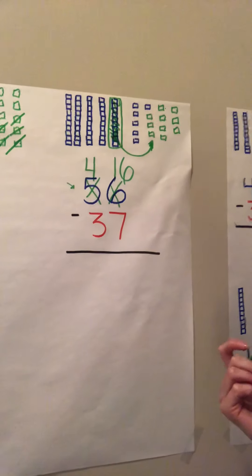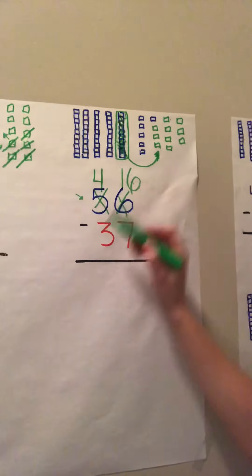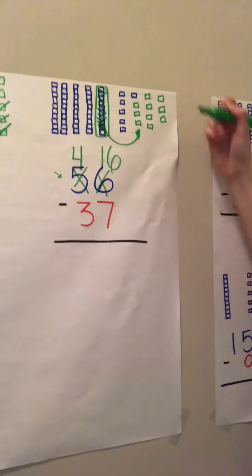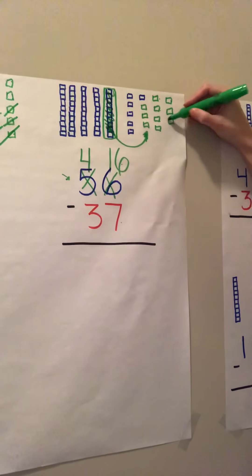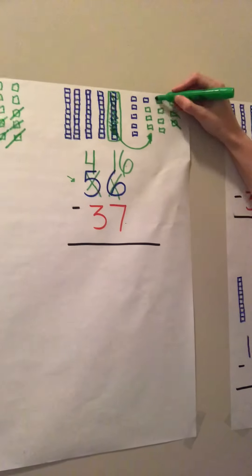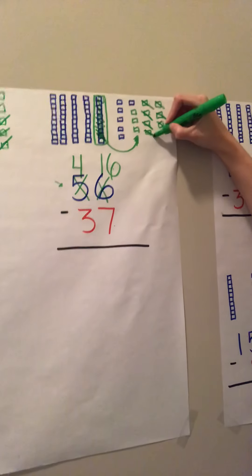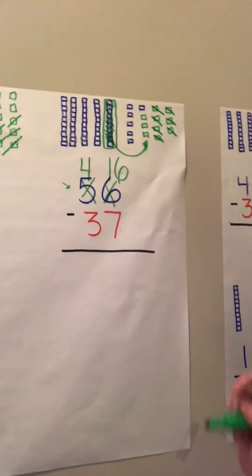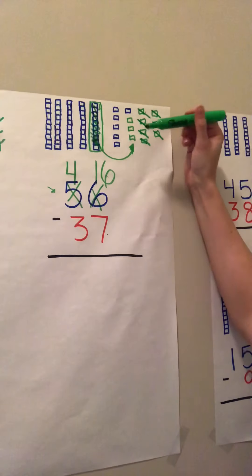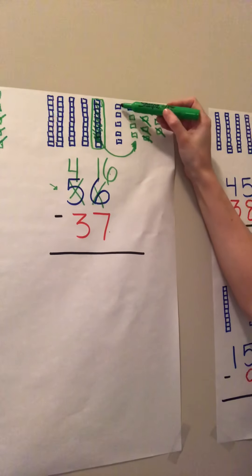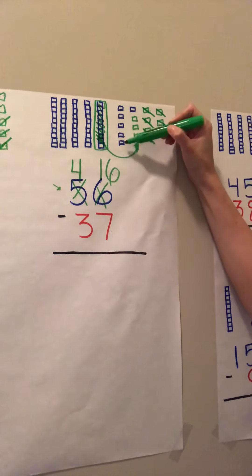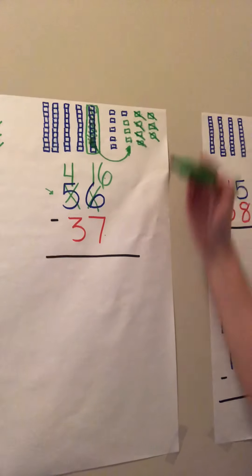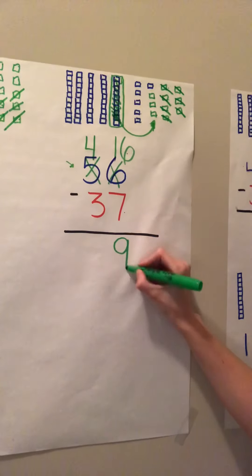Now we're ready to subtract. So we have sixteen minus seven. So I need to take seven away — one, two, three, four, five, six, seven. Now we can see how many ones we have left. We have one, two, three, four, five, six, seven, eight, nine. So we have nine ones left.